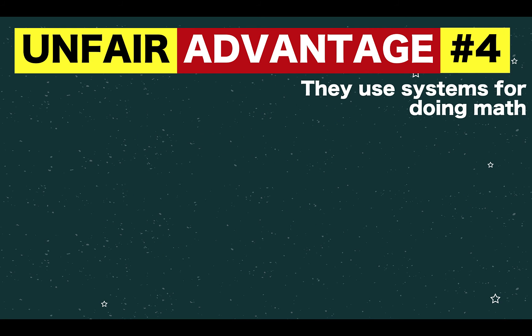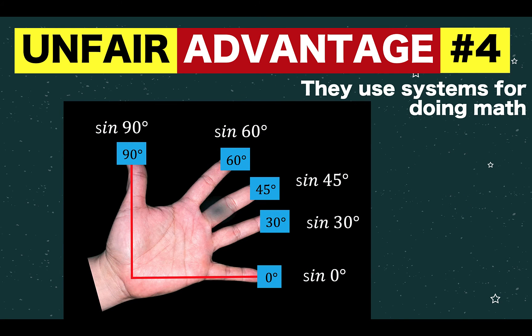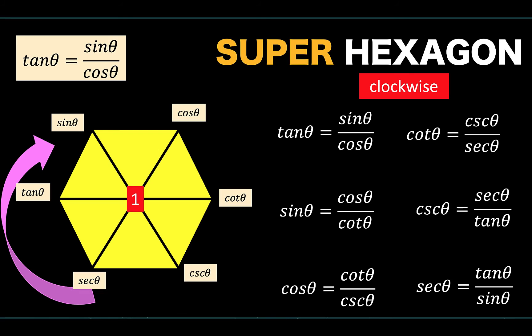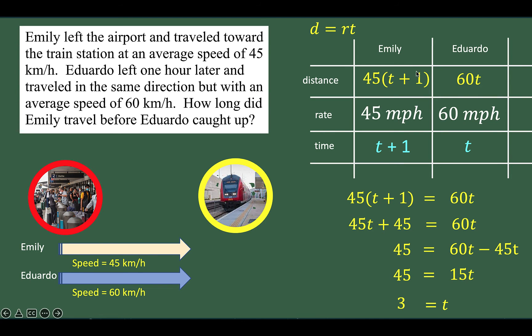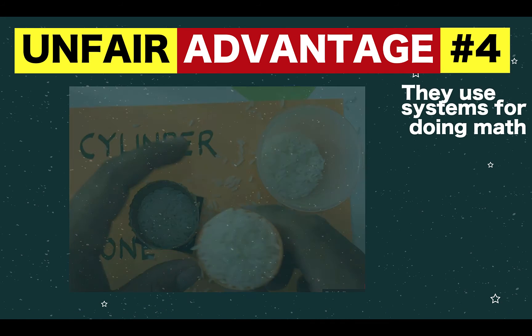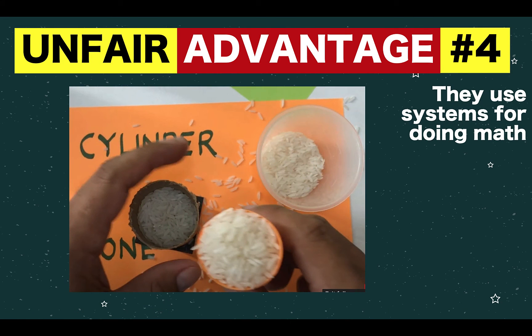Superior math students use systems for doing mathematics. For example, when they are studying trigonometric functions, they can form this system in order to remember exact values of trigonometric functions. We have a video discussing these trigonometric hunt tricks. This super hexagon also can be a system that you can use in order to memorize more than 40 trigonometric identities. Or you can use simulation to understand the shape of a normal curve. Or you can use diagrams and tables to systematically analyze word problems.